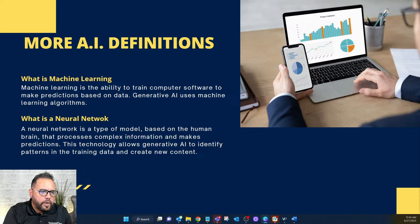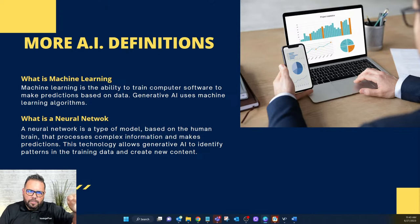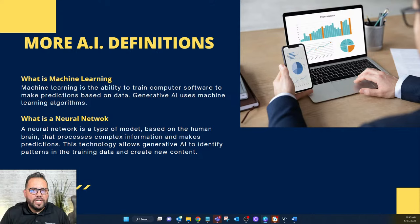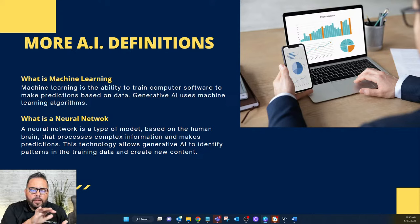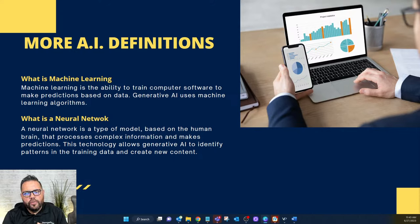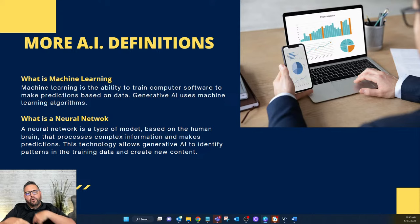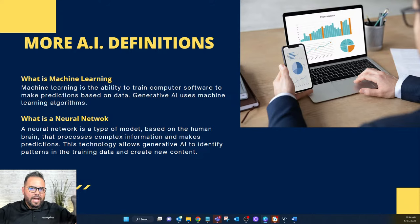So what is machine learning? It's the ability to train computer software to make predictions based on data. Generative AI uses machine learning algorithms. A neural network is a type of model based on the human brain — it processes complex information and makes predictions. This technology allowed generative AI to identify patterns in training data and create new content. Neural networks allowed generative AI to do what it does; machine learning is what generative AI is based on.